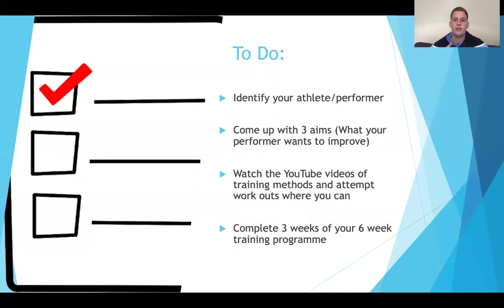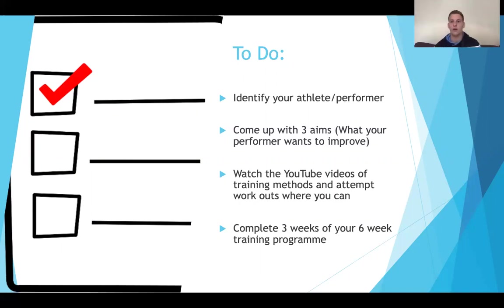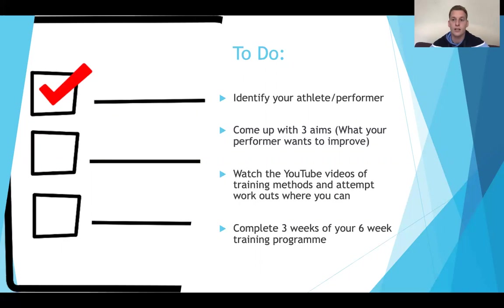To summarise your to-do list: first, identify and create your athlete or performer. Please pick a sport you're familiar with — I wouldn't pick horse riding because I don't know anything about horse riding. Make sure you know what kind of training they'll need and how they can improve. It's really useful if you actually know quite a bit about the sport.